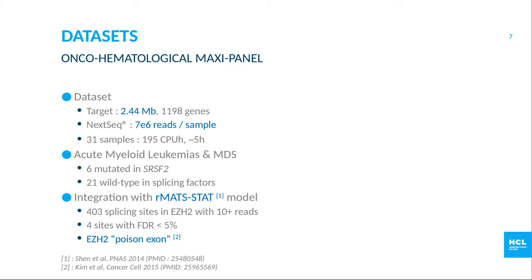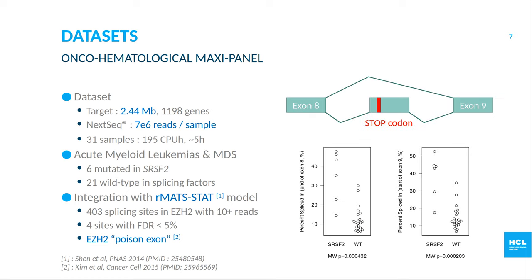We integrated the rMATS statistical model in SAMI. To illustrate this, we looked at results for EZH2, a well-known gene in hematology. In this gene there are 403 splicing sites with at least 10 reads, and four sites reach significance at FDR 5%. All of these correspond to the well-known poison exon phenomenon: between exons 8 and 9 of EZH2 there is a pseudoexon containing a stop codon. In patients with SRSF2 mutations, there is preferential inclusion of this pseudoexon, meaning most EZH2 transcripts are effectively inactivated.